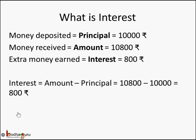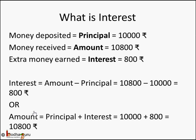Amount equals principal plus interest — initial value plus interest: 10,000 plus 800 is 10,800. So principal is initial value, amount is final value, and interest is the extra — whether you are taking a loan or making a deposit, the terms remain the same.